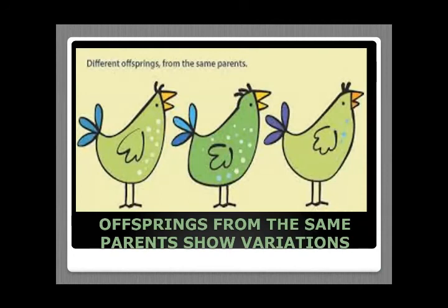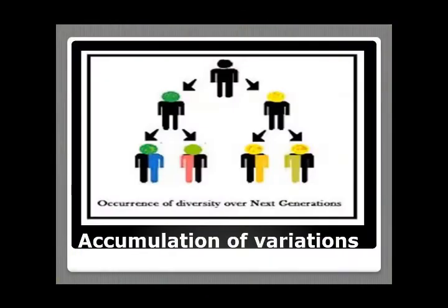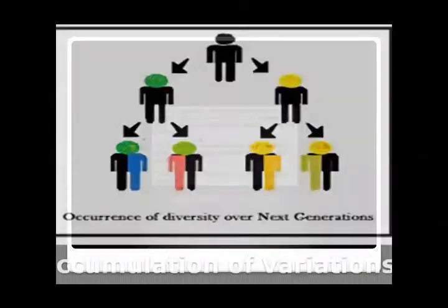All offspring of the same parents are not similar — there are certain changes, and these changes are known as variations. This figure makes it very clear how variations accumulate generation after generation.